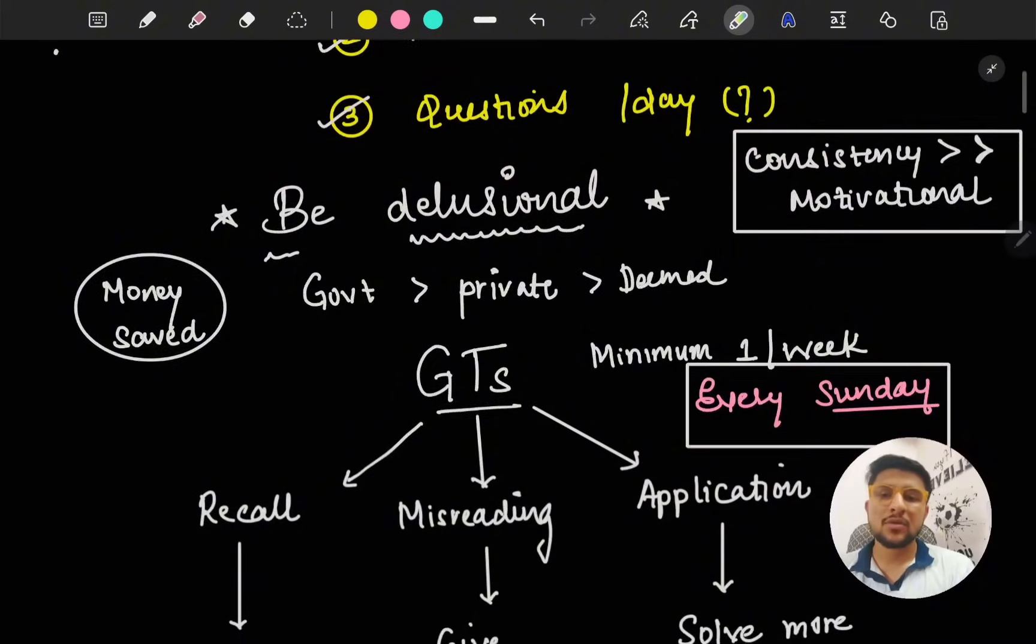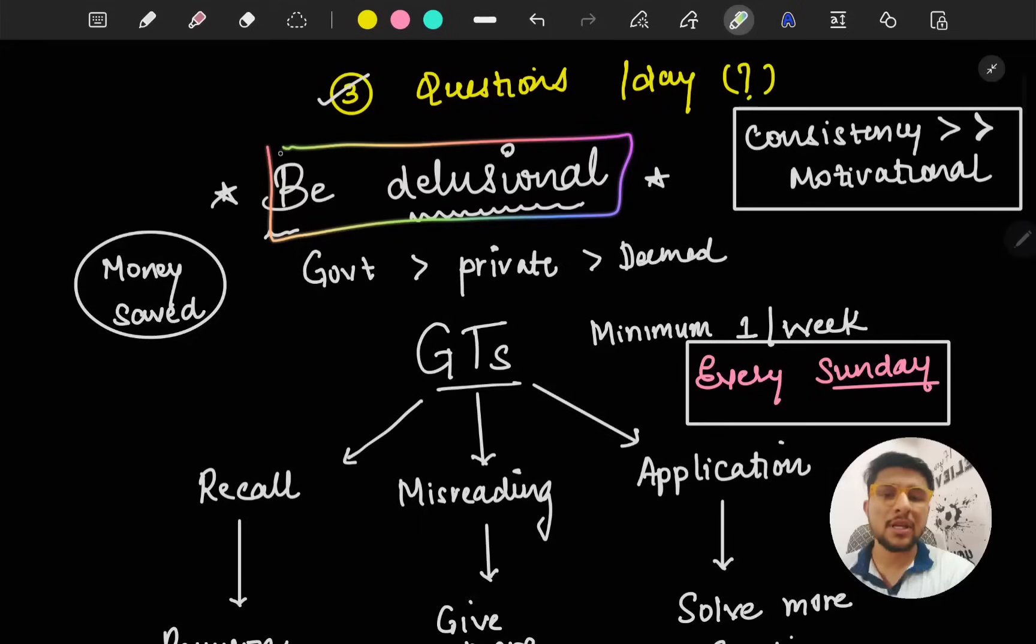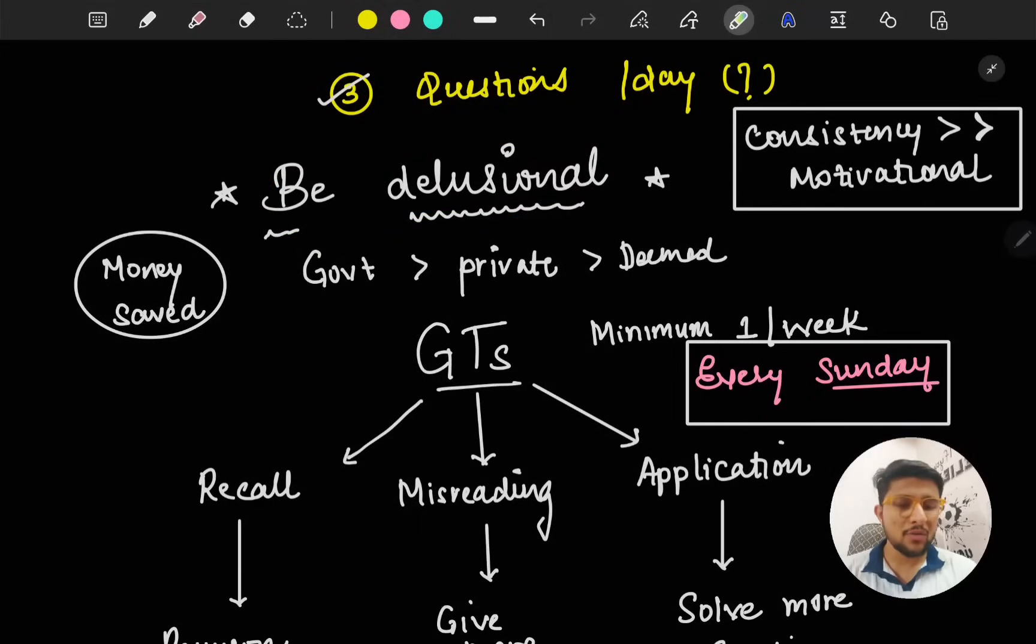First thing first, be delusional when you're preparing. I know nobody is confident before they get a rank, but you have to think that you're going to get the seat you're dreaming of. You have to be confident and work as if you've already achieved it. Consistency will beat motivational bursts. If you work consistently in the next two months, it will be more beneficial rather than showing up for 15-16 hours one day and then doing nothing for the next two days.